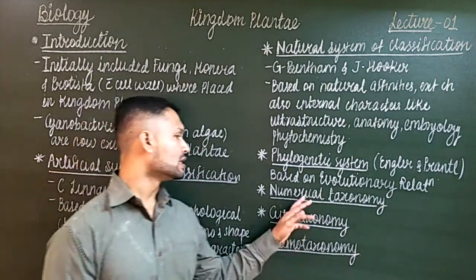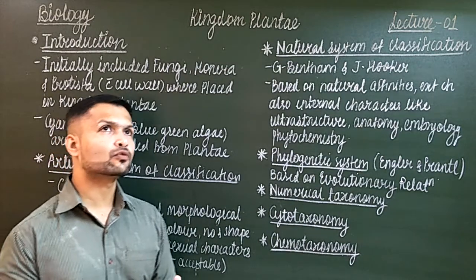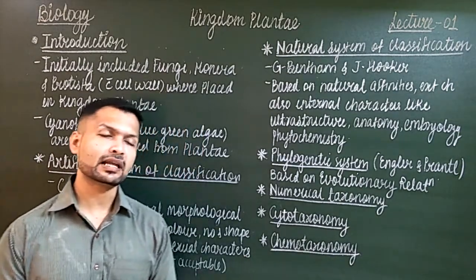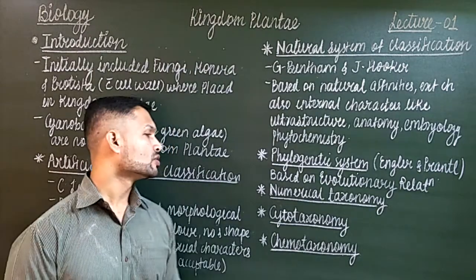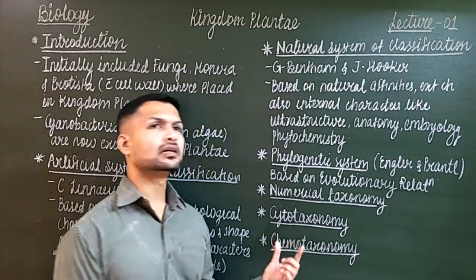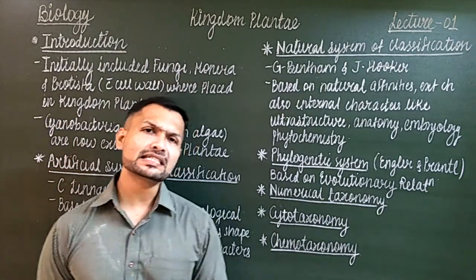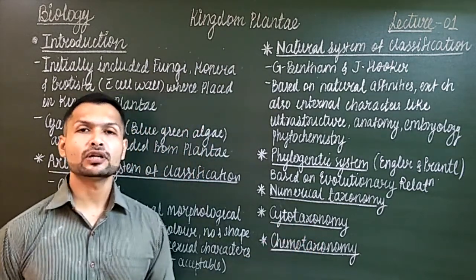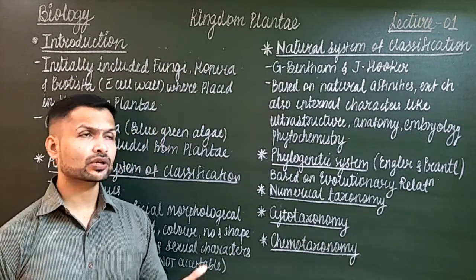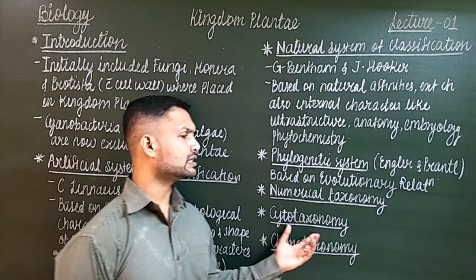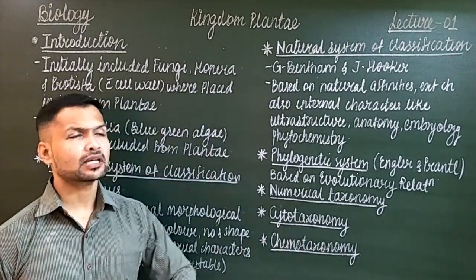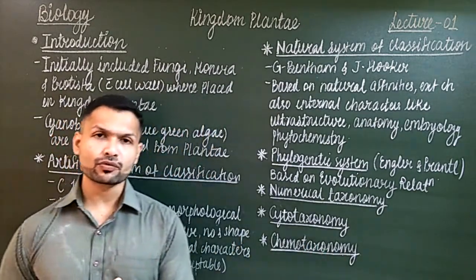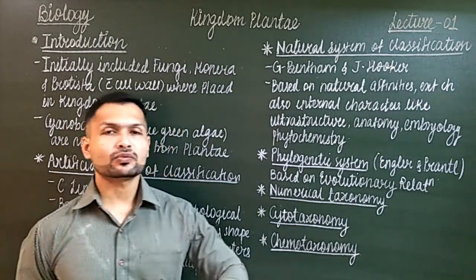Cytotaxonomy also helps — suppose two closely related plants need to be separated into subclasses, families, or genus. Here we take the help of structures present in the cell, like the chromosome number and structure of chromosomes. We can use cellular information for our studies — if chromosome numbers match and most characters match, we can say these are two similar species, perhaps of the same genera, and we can also point out the differences.